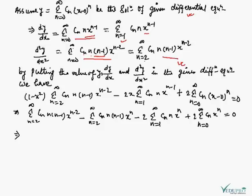After differentiating, by putting the values of y, dy/dx, and d²y/dx² into the given differential equation, we get: (1 - x²) · Σ(n=2 to ∞) cₙ·n(n-1)·x^(n-2) - 2x · Σ(n=1 to ∞) cₙ·n·x^(n-1) + 2 · Σ(n=0 to ∞) cₙ·x^n = 0.